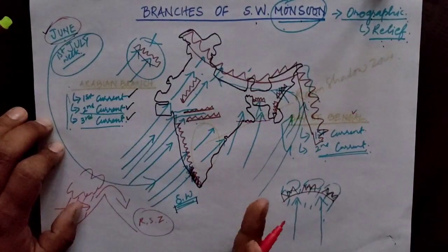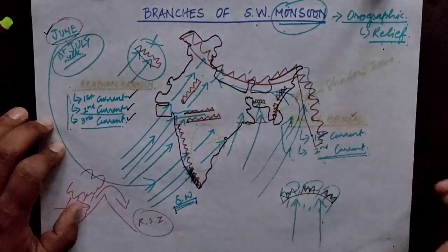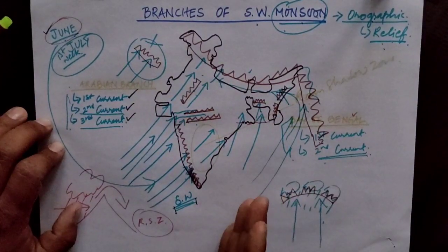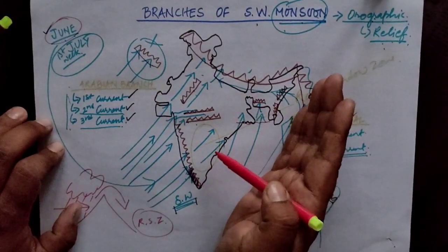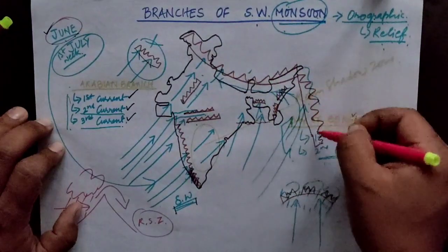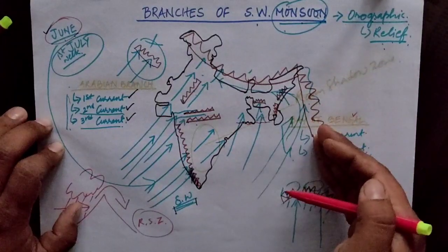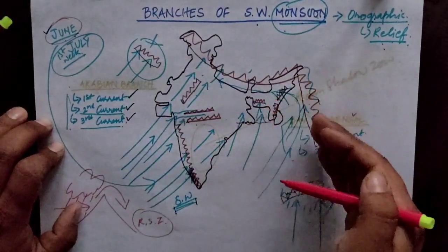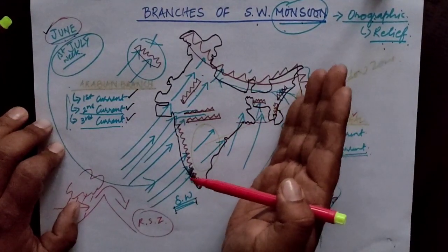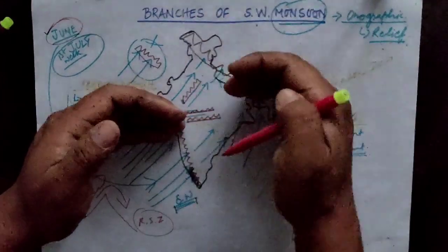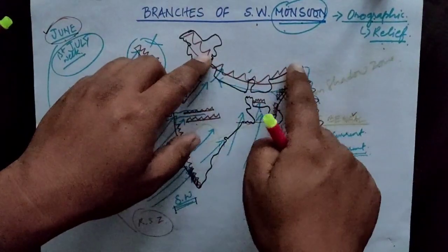The second current of the Bay of Bengal branch enters Myanmar from the northeastern direction. The Himalayas do not end at Arunachal Pradesh — they extend southward, creating an L-shaped structure called the Arakan Yoma in Myanmar. The second current showers rainfall over Myanmar, then curves into the states of Nagaland and Arunachal Pradesh due to the cornering effect of this L-shaped Himalayan extension.